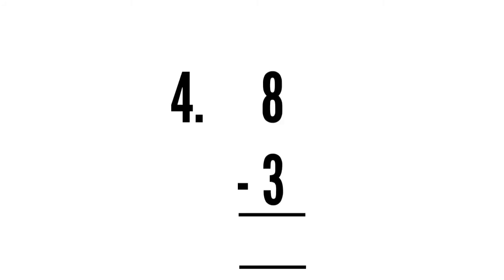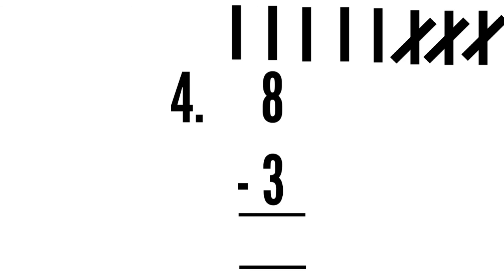Let's see the next example. The next sum is eight minus three. Which one is bigger? Eight is bigger. So how many lines do you have to draw? Eight lines: one, two, three, four, five, six, seven, eight. How many lines do you have to cross out? Three lines: one, two, three. Now count the leftover lines: one, two, three, four, five. The answer is five.